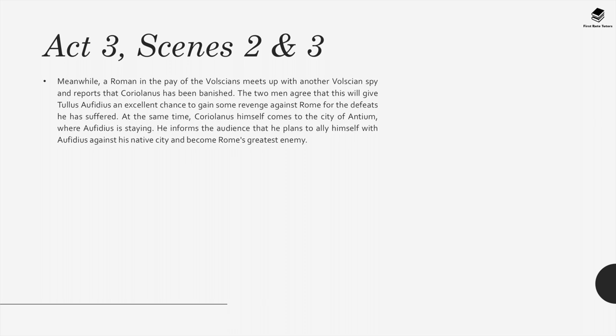Volumnia weeps and curses the city for casting him out, while Cominius offers to accompany him for a time but Coriolanus refuses these offers and departs. Volumnia spots the two tribunes and denounces them, saying that they have exiled the best man in Rome. Meanwhile a Roman in the pay of the Volscians meets up with another Volscian spy and reports that Coriolanus has been banished. The two men agree that this will give Aufidius an excellent chance to gain some revenge against Rome. At the same time, Coriolanus himself comes to the city of Antium where Aufidius is staying, planning to ally himself with Aufidius against his native city and become Rome's greatest enemy.